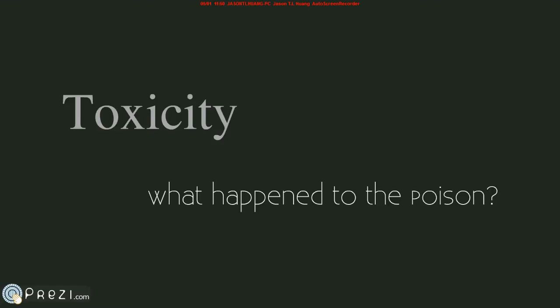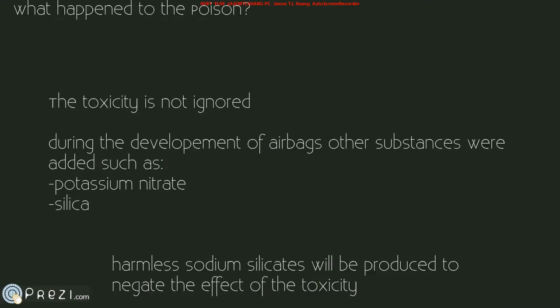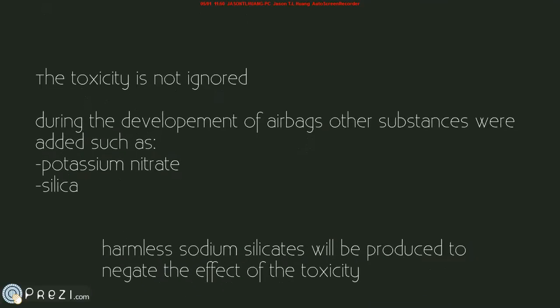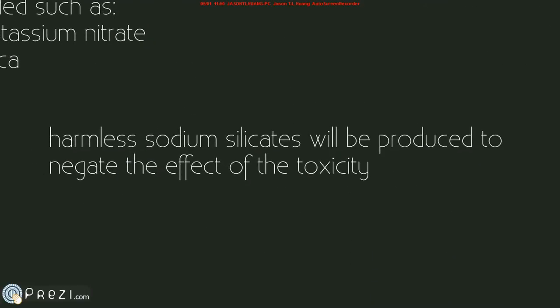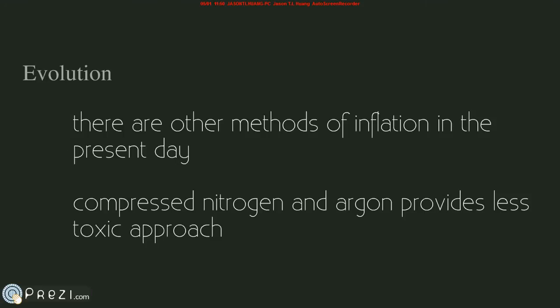Now we'll go back to the toxic and poisonous quality of sodium azide. The toxicity has not disappeared inside an airbag without the help of other chemicals. During the creation of airbags, potassium nitrate and silica were added to negate the effect of toxicity, and harmless sodium silicate is created. In the more modern versions of an airbag, compressed nitrogen and argon gas are used instead. This approach provides a less toxic and less expensive method of creating airbags.